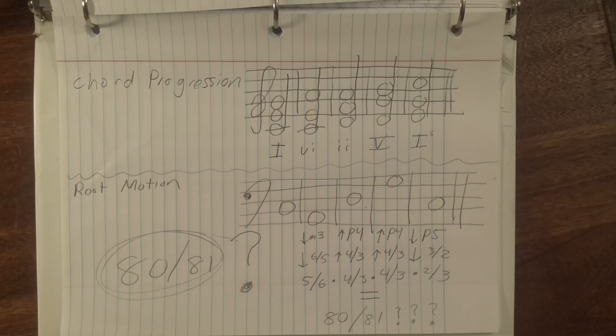For most chord progressions, it is impossible to maintain smooth voice leading and pure intonation without this chromatic drift. So either the pitch continually drifts, or the pitch has to be jarringly corrected at some point. Neither of these options is desirable in most musical contexts.